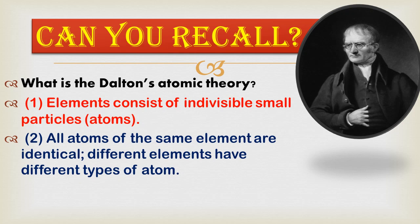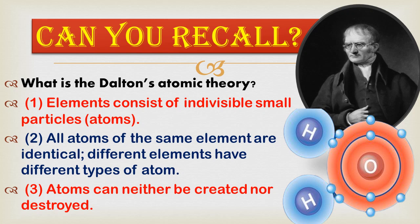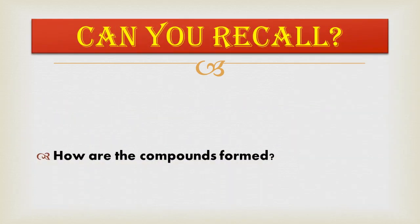All atoms of the same element are identical — for example, all atoms of hydrogen are the same. Different elements have different types of atoms; in a water molecule there are atoms of both hydrogen and oxygen. The third point is that atoms can neither be created nor destroyed. In forming water, hydrogen and oxygen combine and convert into water — they are not created or destroyed.